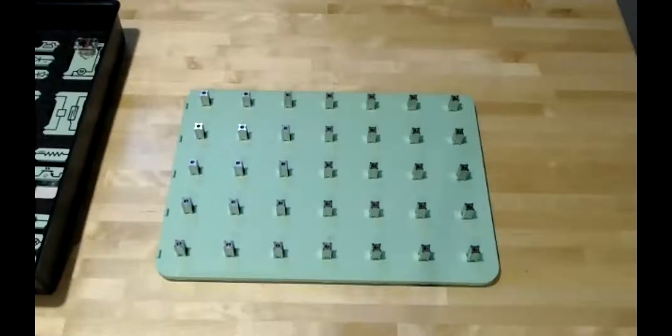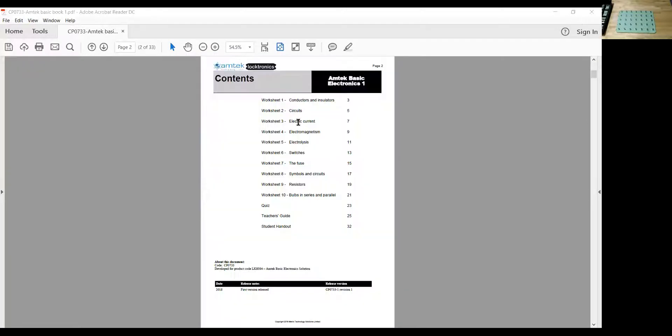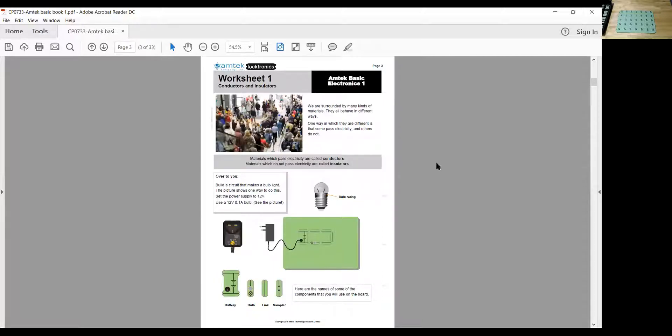So let's go through some of these exercises so you can get an idea of the kit, how the kit works, and some of the things and concepts that the kit will help teach. Now we're going to switch over to the PDF so you can get a look at what I'm looking at as well. So again, electronics is going to take you through each of the chapters. We're going to start with conductors and insulators, move into circuits, how electric current works, and then eventually into electromagnetism, switches, fuses, and resistors.